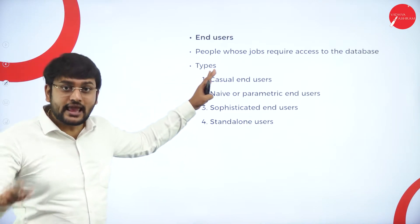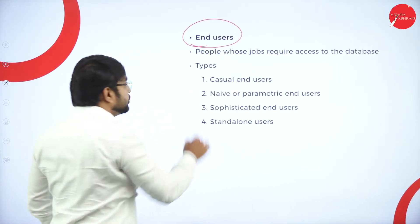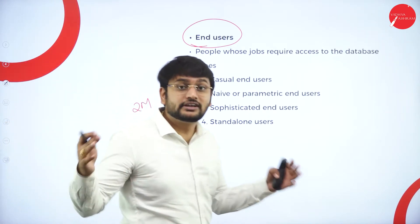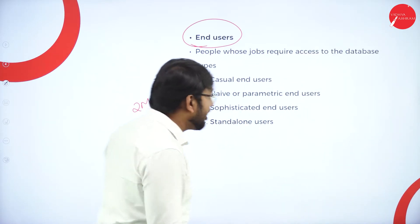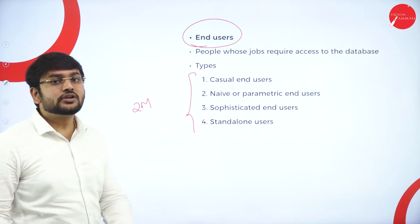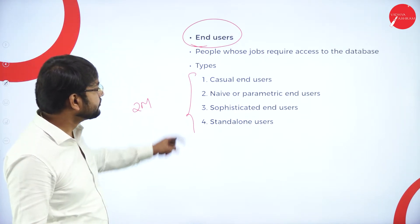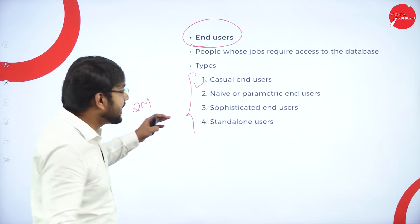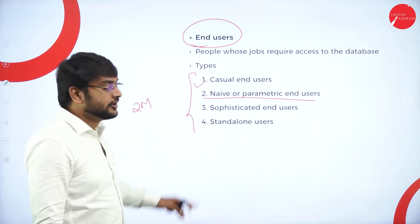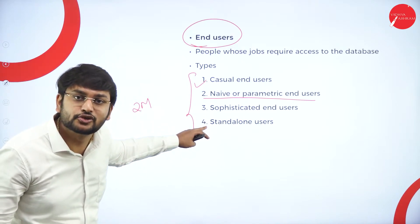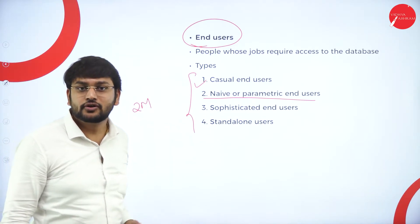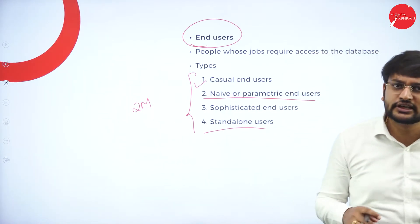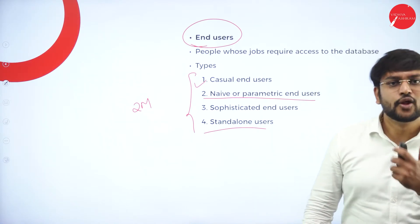The next actor is the end user. You can also expect this for two marks — mentioning the different types of end users. There are four types: the first is casual end user, second is parametric end user, third is sophisticated end user, and the last is standalone end user. Let's understand each one in detail.